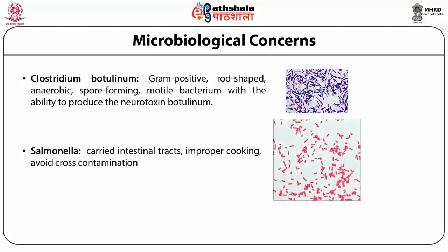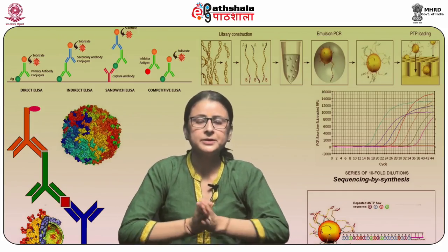Salmonella enters the body when we consume food that is not properly cooked. To keep away this bacteria, we should take properly boiled or cooked food and avoid cross-contamination. Cross-contamination occurs when different types of foods are mixed and contamination from one food becomes a source of spoilage in another. This bacteria is gram-negative after gram staining.